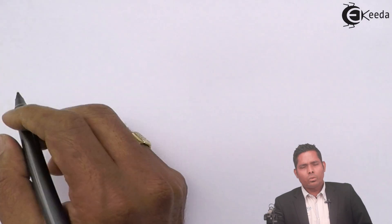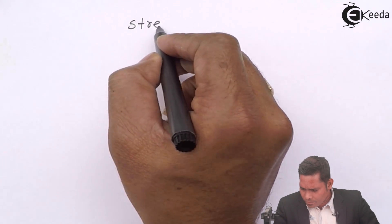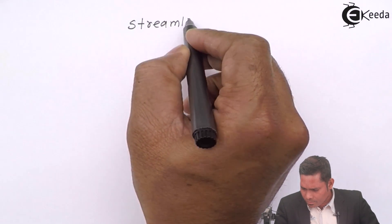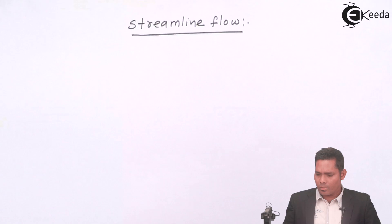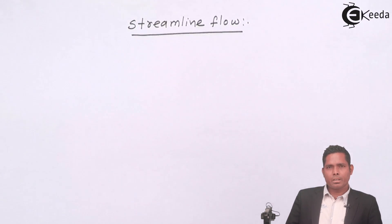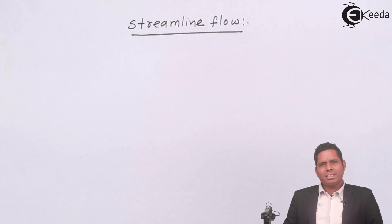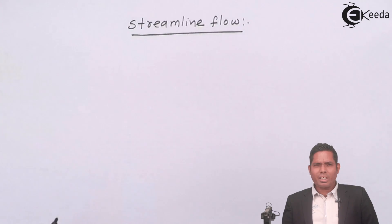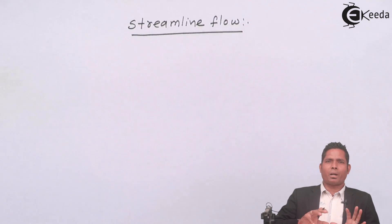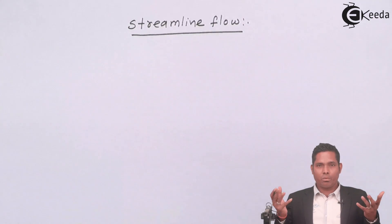Let us understand what is Streamline Flow. A streamline is a path, and the type of path that particles follow is what we call Streamline Flow.